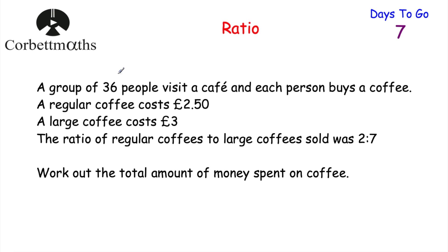Let's look at our next question. A group of 36 people visit a cafe and each person buys a coffee. A regular coffee costs £2.50 and a large coffee costs £3. The ratio of regular coffees to large coffees sold to the group was 2 to 7. Work out the total amount of money spent on coffee by the group. This is a calculator question, so you can use a calculator.